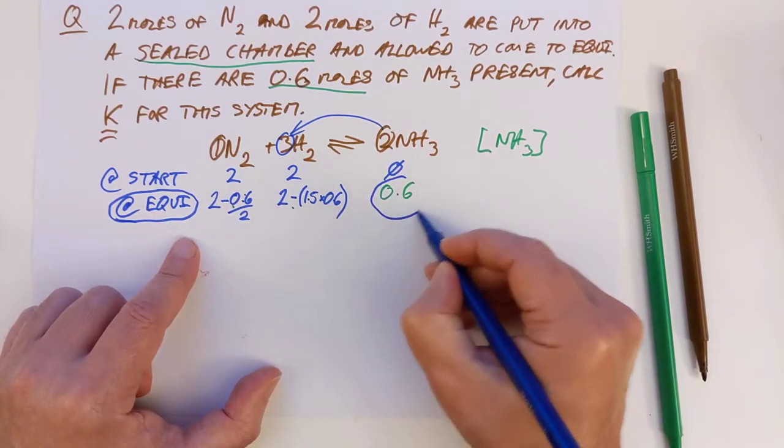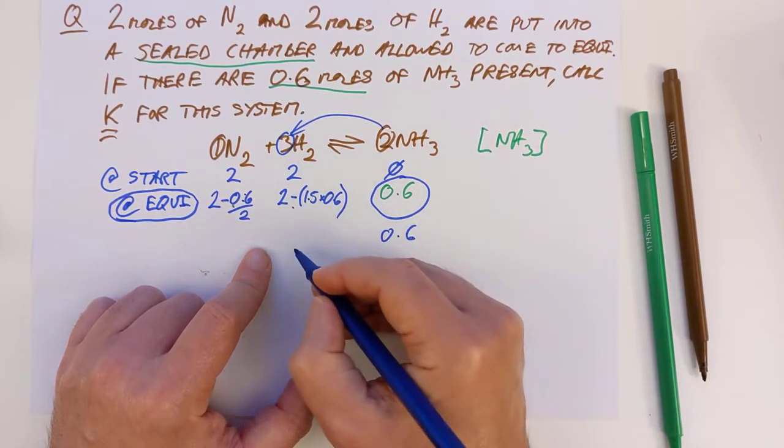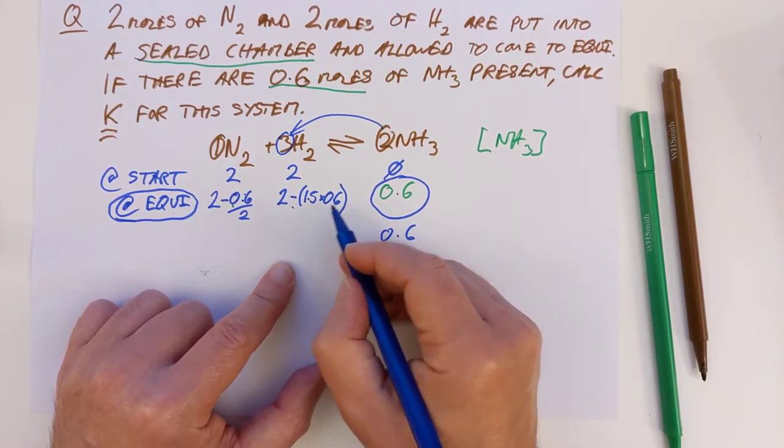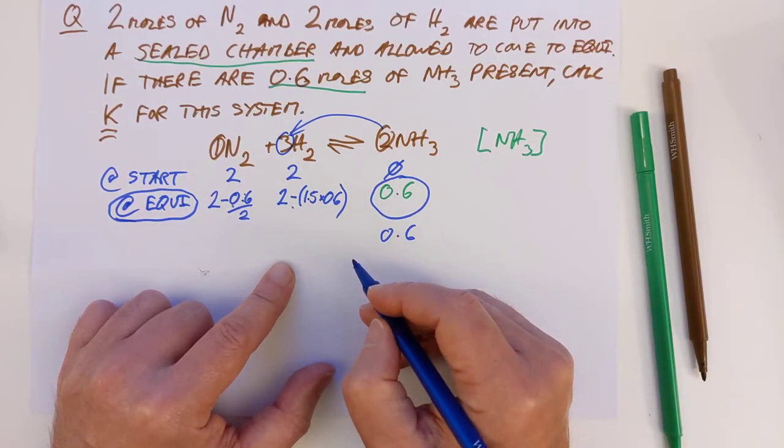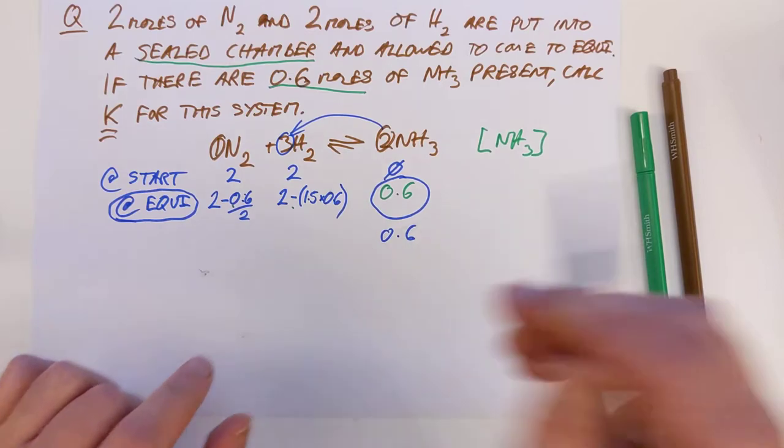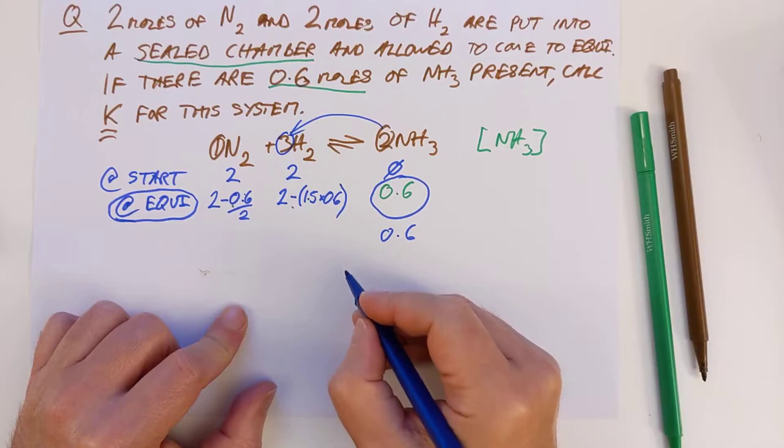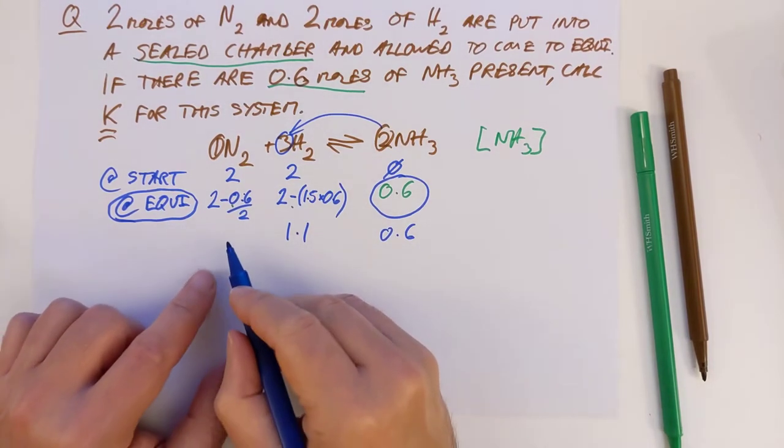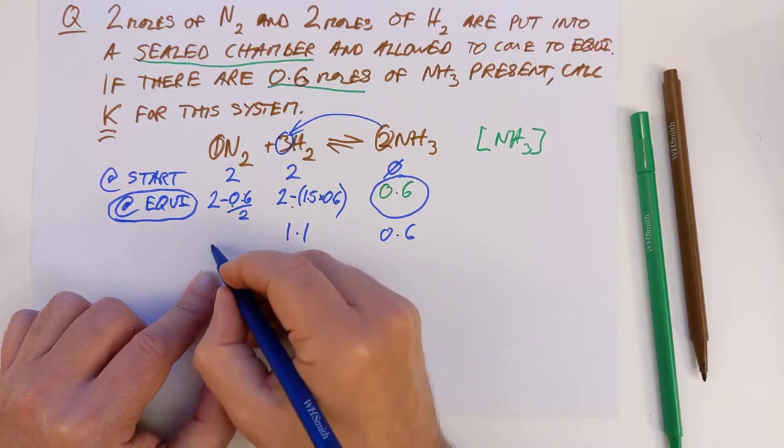And we know that we started with 2, so we have got 2 take away 0.3. And this one here, this is a ratio of 3 to 2. So if we have produced 0.6 moles here, we need 1.5 times this, because that's the ratio. 3 is 1.5 times 2. So we have got 2 take away 1.5 times 0.6. So 2 take away 0.9 is 1.1, and 2 take away 0.3 effectively is 1.7.